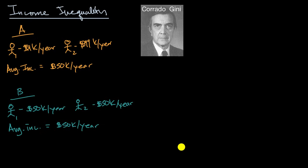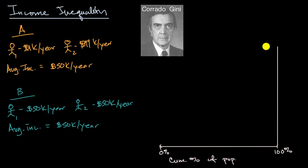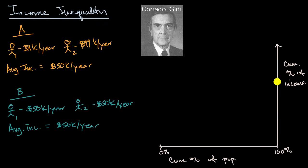What he did is set up two axes. The horizontal axis is the cumulative percentage of the population — starting at 0% and going all the way to 100% of the population. On the vertical axis, you have the cumulative percentage of the income in a country, going from zero at the bottom to 100 at the top.